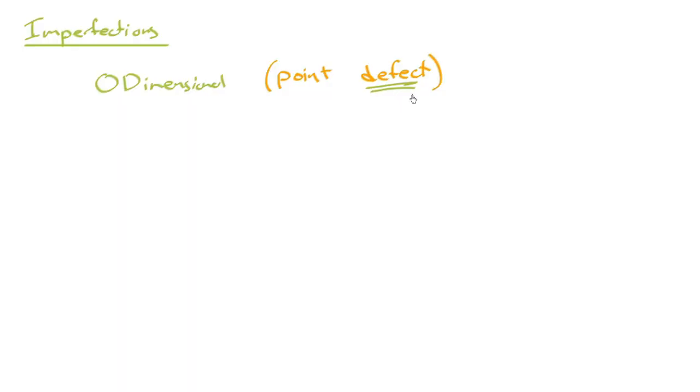I don't like to use the word defect all the time because of that negative connotation. I want you to remember that these imperfections are often designed in intentionally, and they can be good. In practice, you will find that the word defect is used especially associated with zero-dimensional imperfections, so point defect is often what is used.